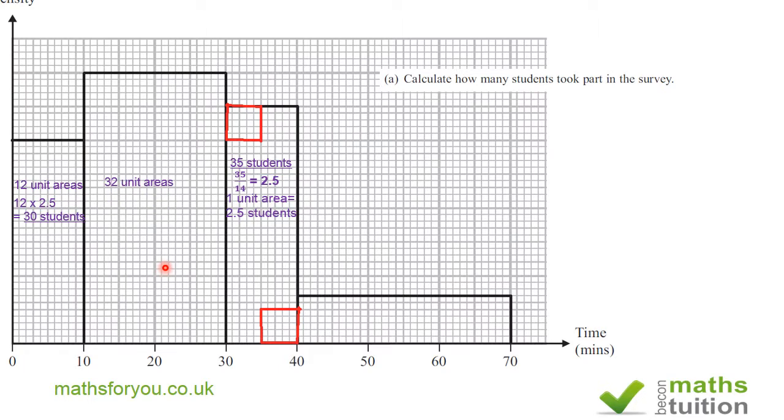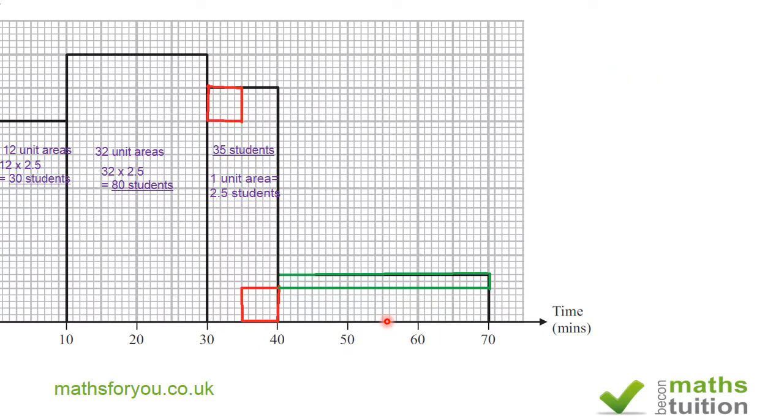Now in this area where we have 32 unit areas the number of students would be 32 times 2.5 and that gives us a figure of 80 students. We already know the number of students in this section. Now this section is a bit of a challenge here.